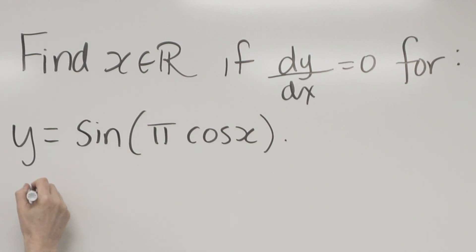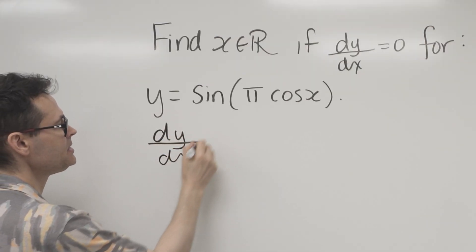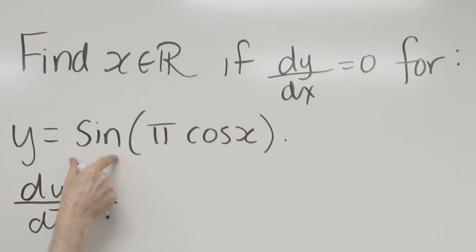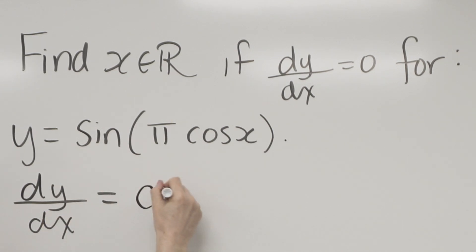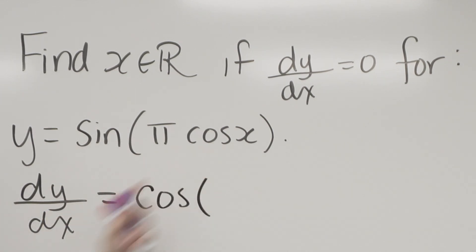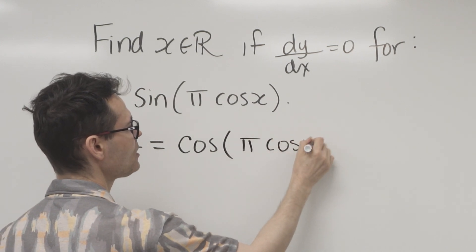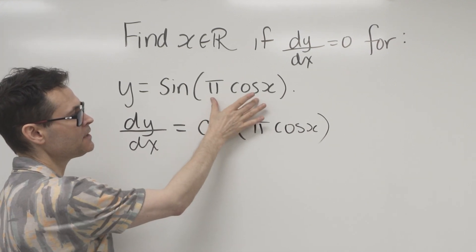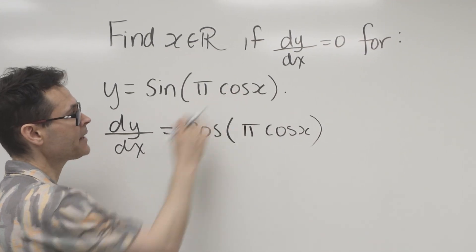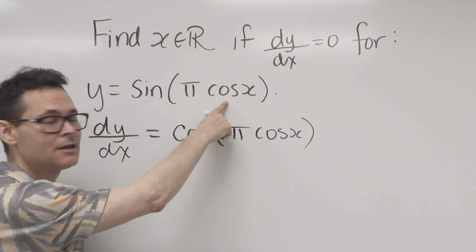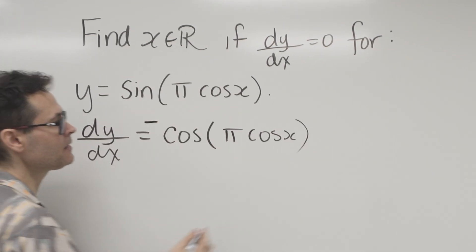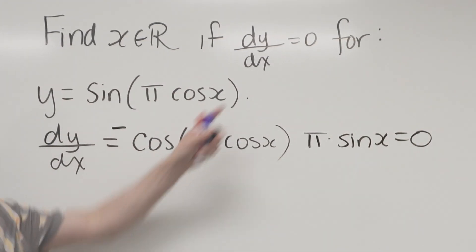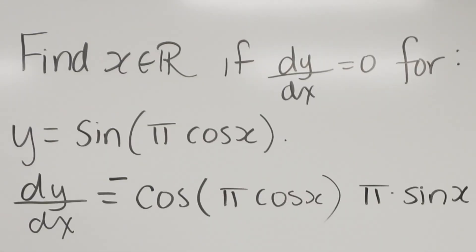It's requiring the condition that dy/dx is equal to zero. I'm going to begin by taking the derivative. dy/dx equals — I take the derivative of this composite function, beginning with the derivative of sine, which is cosine, evaluated at the same input: pi·cos(x). Then I use the chain rule to differentiate the inside function. The derivative of pi·cos(x) — the derivative of cos(x) is negative sine — so putting the minus in front gives negative pi·sin(x).